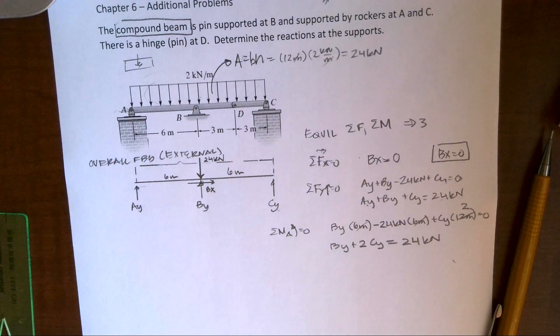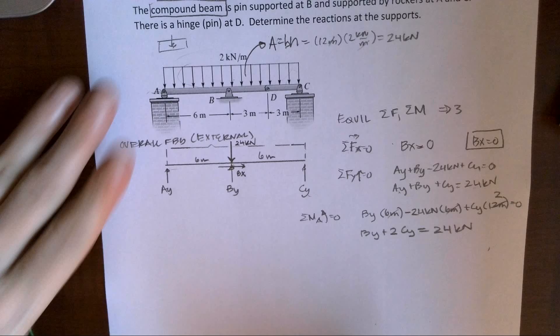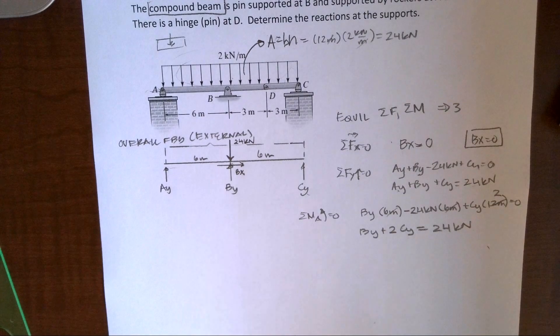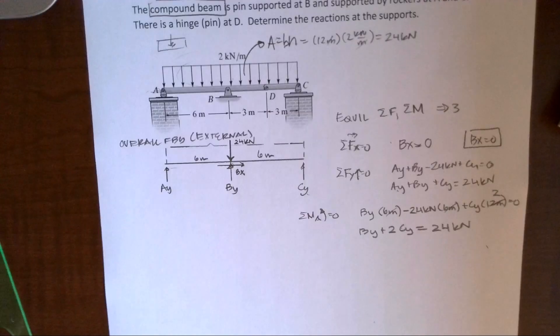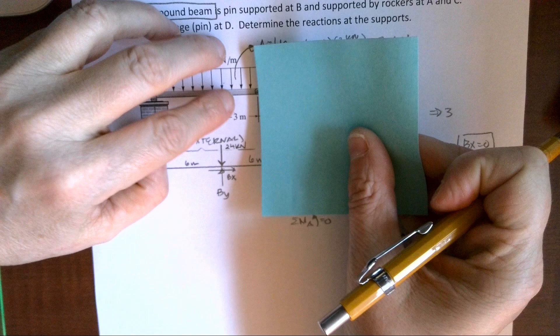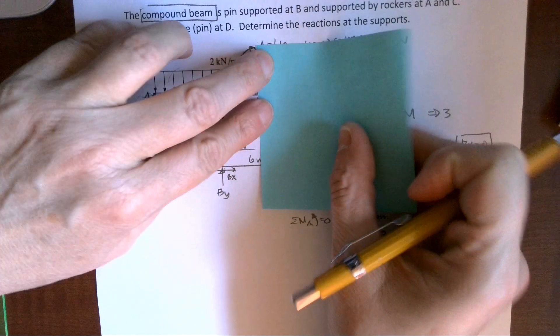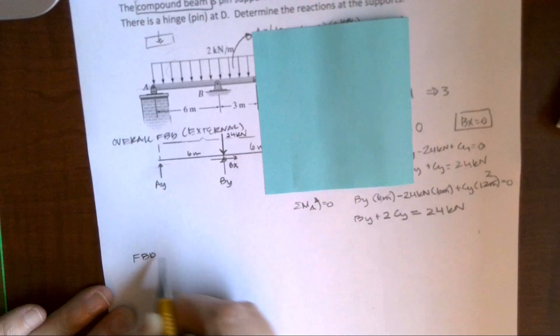And then represent that pin with unknown X's and Y's. I know sometimes when you're a student and you're learning a new skill, you don't really know what you're needing to draw. My favorite thing is post-it notes. If I can take it apart at D, then I'm going to cover it up right here. And I'm going to start drawing free body diagrams of, I'm just going to call it segments.